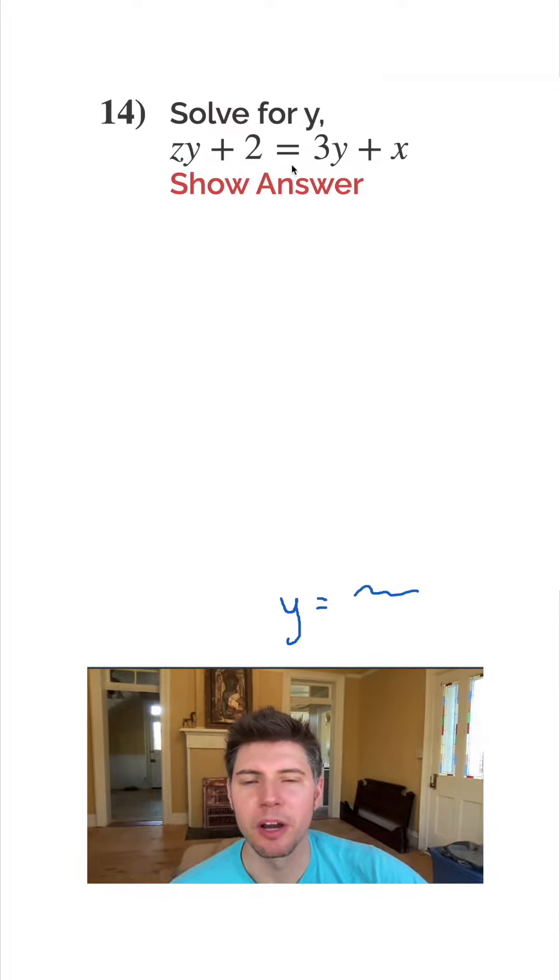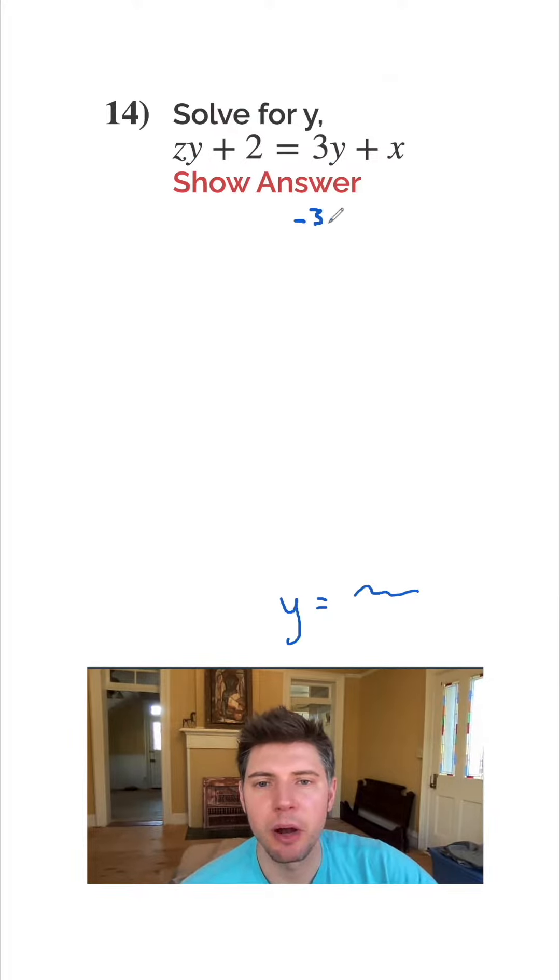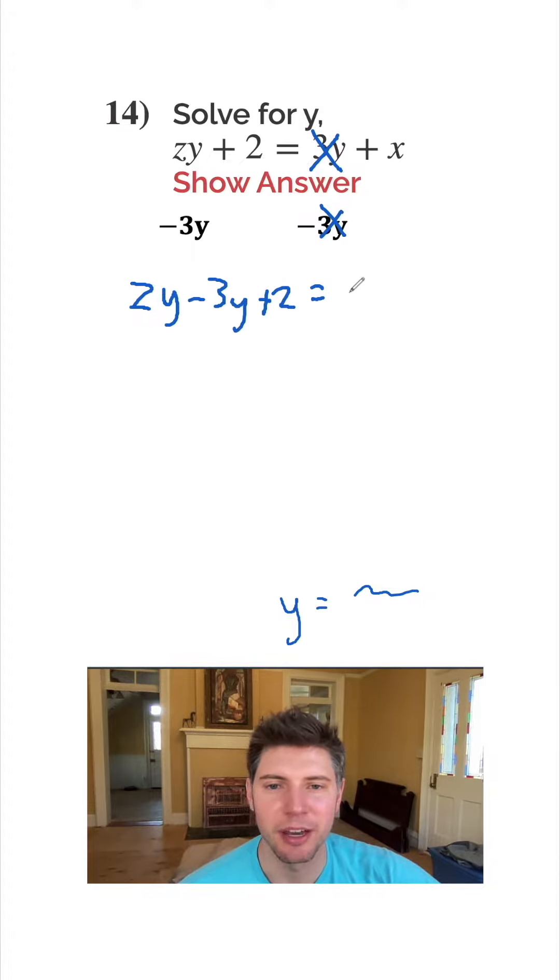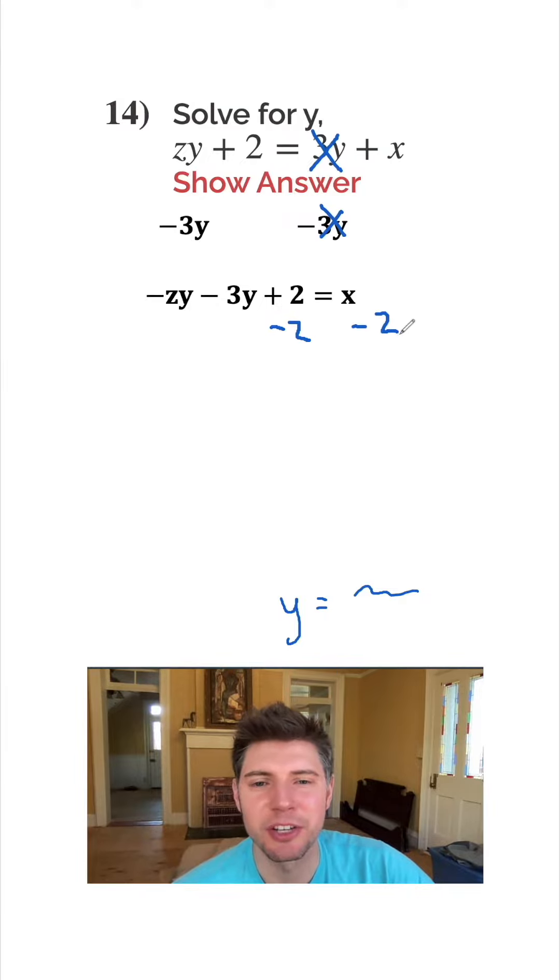So first let's move one y over. So I'm going to subtract 3y from both sides. So this 3y and this negative 3y cancel each other out and on the left hand side we'll have zy minus 3y plus 2 and it's all equal to x. And from here I'll subtract 2 from both sides of the equation.